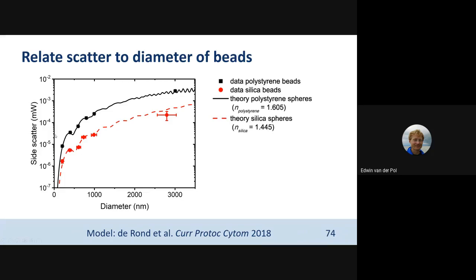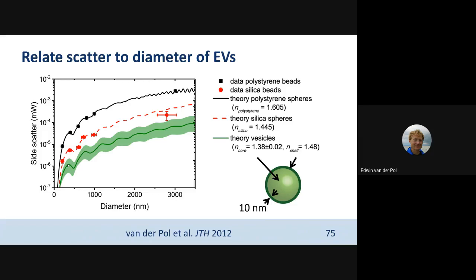That was a handy tool, because now we had a theory which describes our flow cytometer well. We could use this theory to predict what would happen for vesicles. Based on their structure, we assumed that vesicles had a core-shell structure: a shell with refractive index 1.48 based on the composition of vesicle shells, and a core of 1.38 ± 0.02 based on an estimate of protein concentrations in the lumen. You can see in green the confidence interval where we would expect vesicles to be for our flow cytometer.